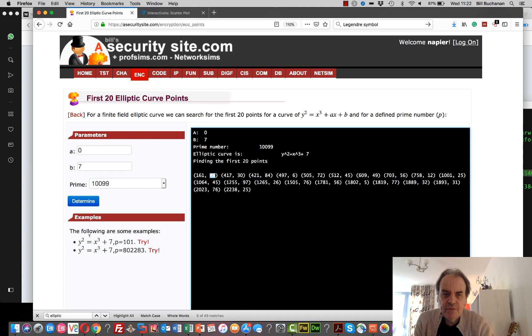The y value comes from taking the square root of x cubed plus seven. The reason that we have these big gaps between the values is that we need to produce an integer value from the square root of the y value.